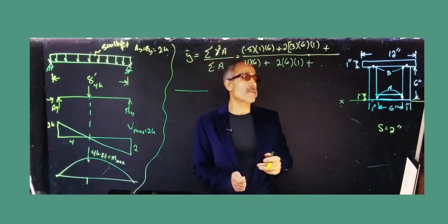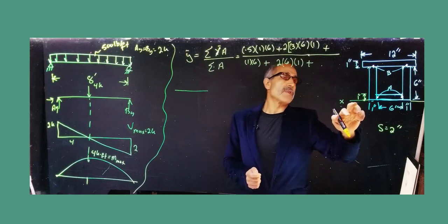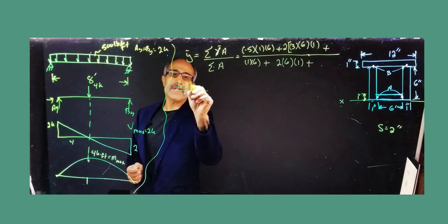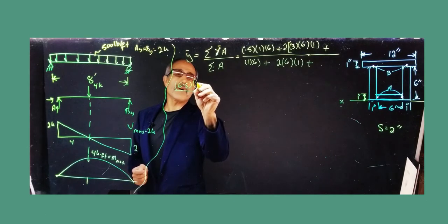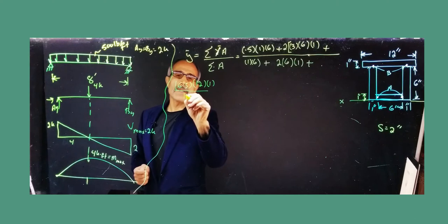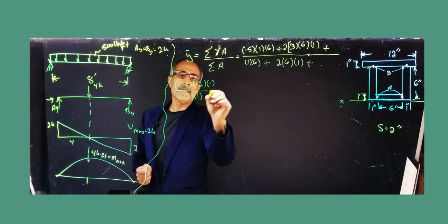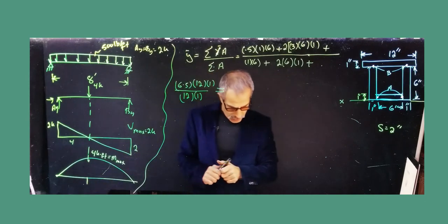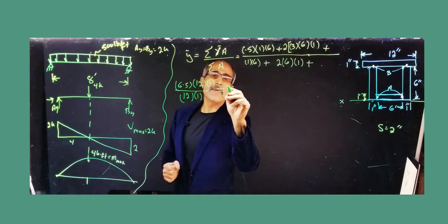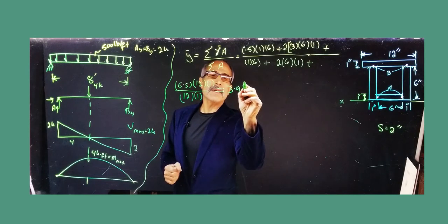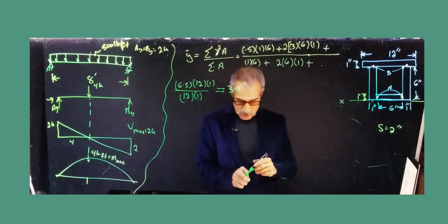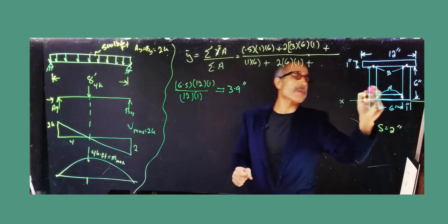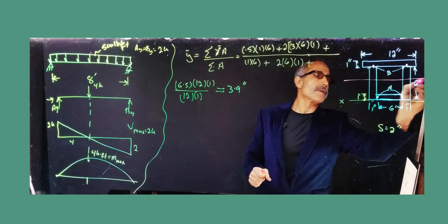For the top piece: the y-bar goes up 6 inches plus half of 1 inch, giving 6.5 inches, and the area is 12 × 1. Dividing the total by the total area gives y-bar equal to approximately 3.9 inches. So the neutral axis is somewhere in the lower portion of the beam.